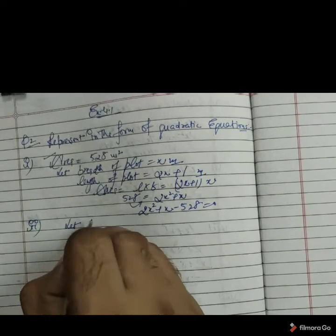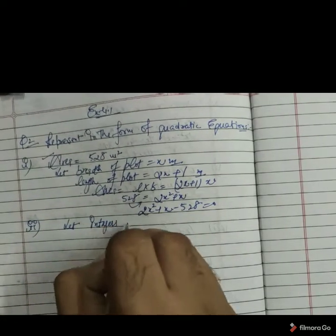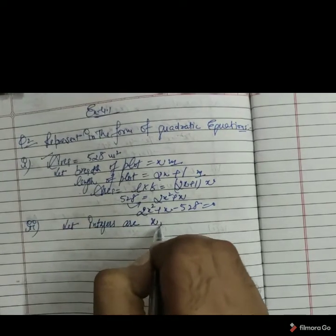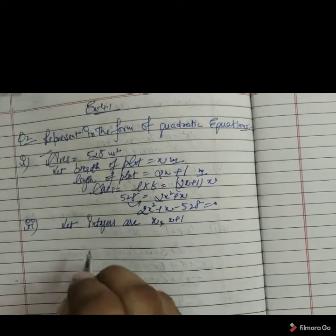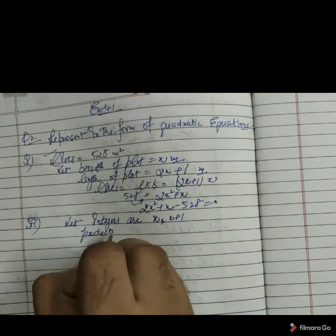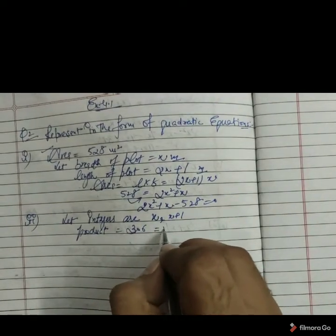So first of all we have to let integers are, first integer we are taking x. Next is one extra otherwise one less. As the question is given their product is given by 306. Product means multiplication of these two.